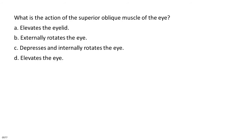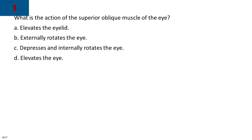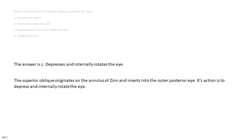What is the action of the superior oblique muscle of the eye? A. Elevates the eyelid. B. Externally rotates the eye. C. Depresses and internally rotates the eye. D. Elevates the eye. The answer is C, depresses and internally rotates the eye. The superior oblique originates on the annulus of Zinn and inserts into the outer posterior eye. Its action is to depress and internally rotate the eye.